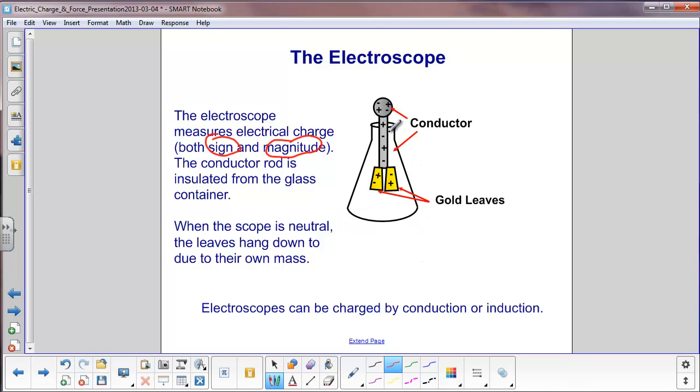We'll start with when there's no charges nearby and you basically have a neutral system. The gold leaves will hang straight down like this due to their own mass. We will be showing here how electroscopes can be charged by both conduction and induction.